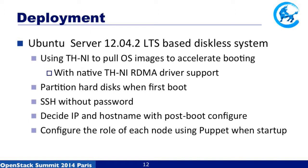We deployed the compute nodes in a diskless configuration, so we cannot deploy the OS image to disk. We deployed the host OS via network boot, supporting PXE diskless boot. The node uses the high-speed network to pull the OS image and partition the hard disk. The node then boots and is assigned its IP address and hostname via the boot configuration.